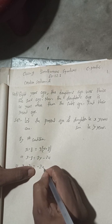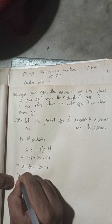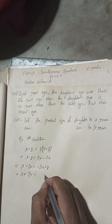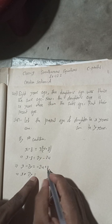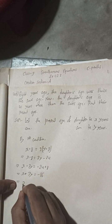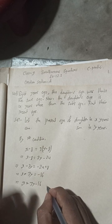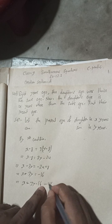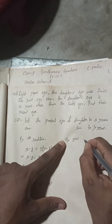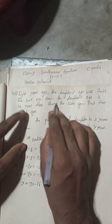So x minus 8 equals 3y minus 24. This implies x minus 3y equals minus 24 plus 8, which is minus 16. Therefore x equals 3y minus 16. This is equation 1.